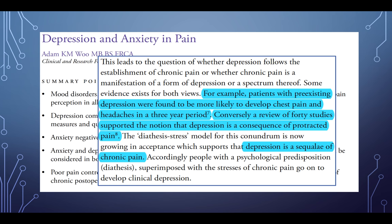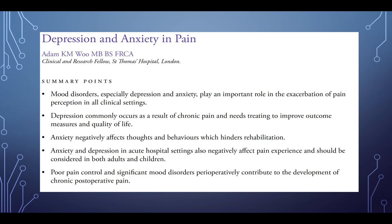This leads to the question of whether depression follows the establishment of chronic pain, or whether chronic pain is a manifestation of a form of depression. Evidence exists for both views. Patients with pre-existing depression were more likely to develop chest pain and headaches over three years, yet a review of 40 studies supported the notion that depression is a consequence of protracted pain. The diathesis-stress model — growing in acceptance — supports that people with a psychological predisposition, superimposed with the stresses of chronic pain, go on to develop clinical depression.